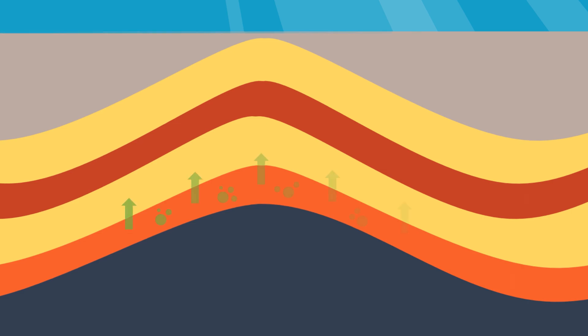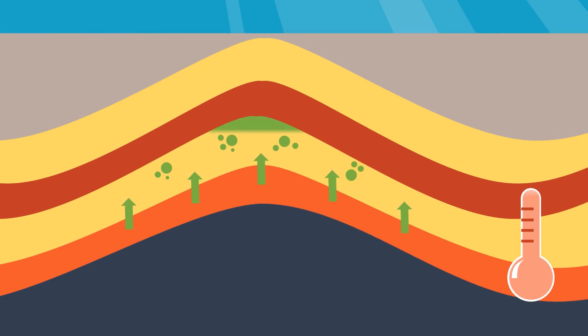The oil migrates out of the kerogen into the sandstone water reservoir, and since oil has a lower density than water, the oil makes its way above the water layer. Here is an example of an oil reservoir.